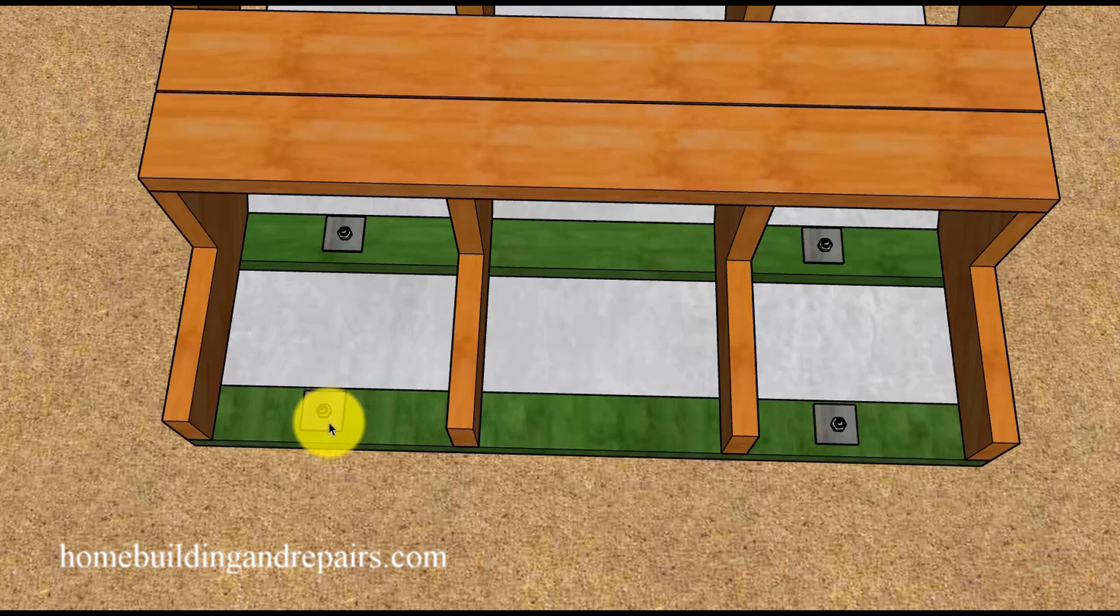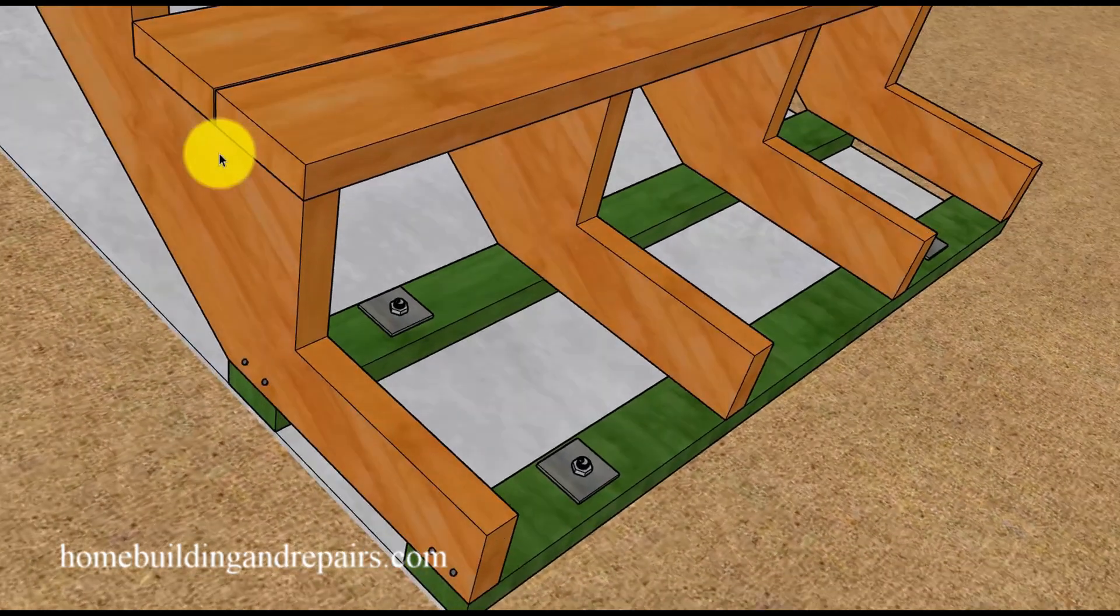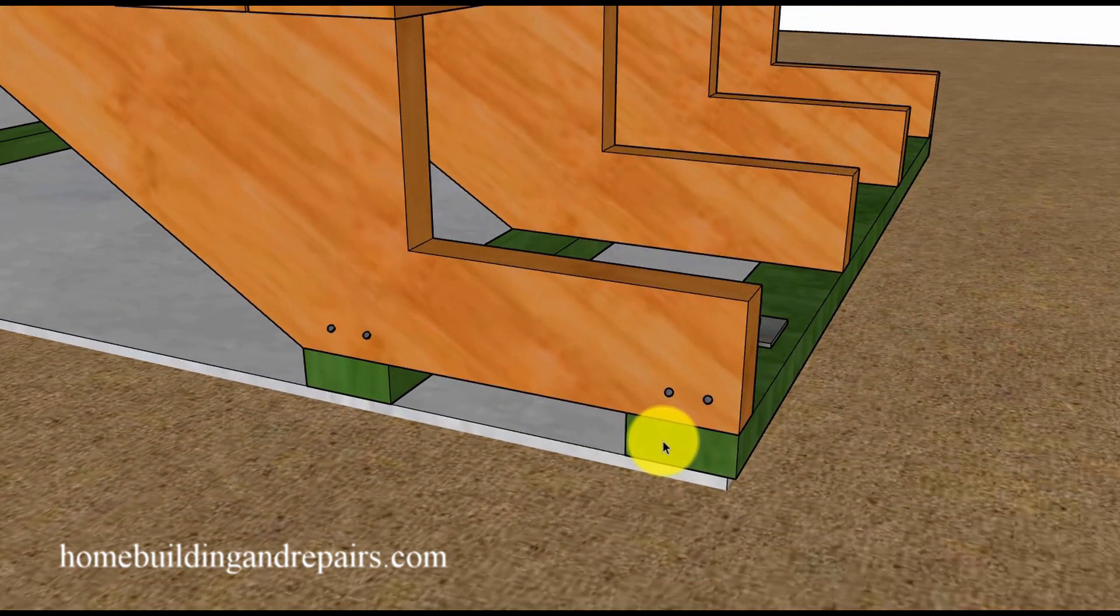Another thing you'd need to do is keep all the washers and nuts loose so the framing plates will move with the stairs if needed. So that's one method: having everything connected to the framing plates and allowing them to move.